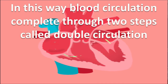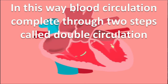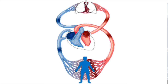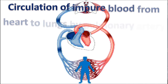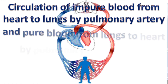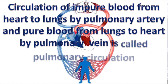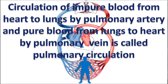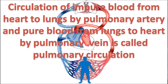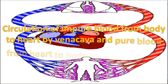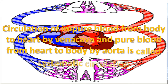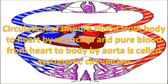Blood circulation completes through two steps called double circulation. First, circulation of impure blood from the heart to the lungs by the pulmonary artery, and pure blood from the lungs to the heart by the pulmonary vein, is called pulmonary circulation. Then, circulation of impure blood from the body to the heart by the vena cava, and pure blood from the heart to the body by the aorta, is called systemic circulation.